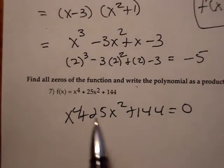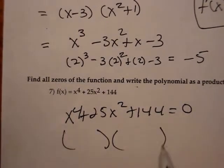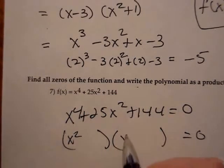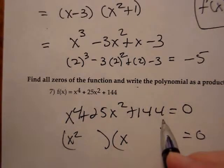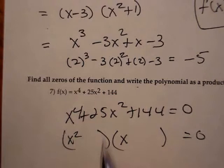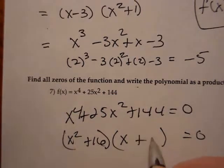Now, the first thing I observe is that I can start by factoring this because this has quadratic form. I can factor x squared and x squared. Factors of 144 that add up to 25 are 16 and 9.